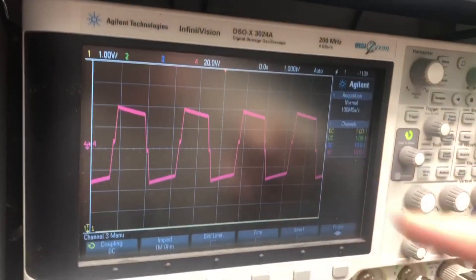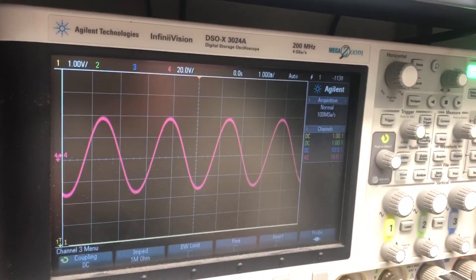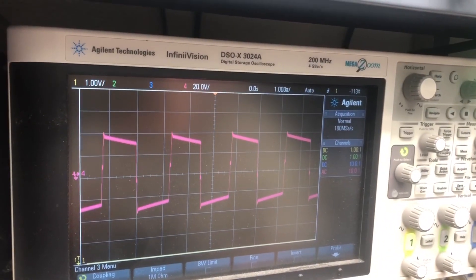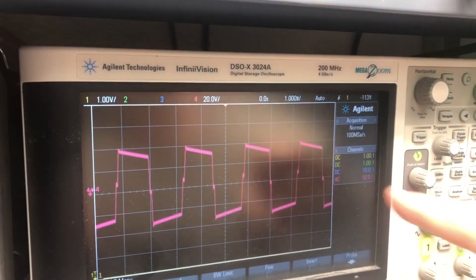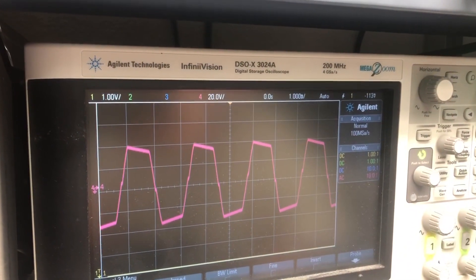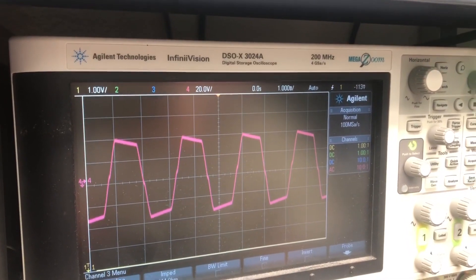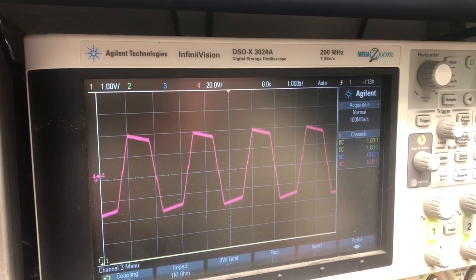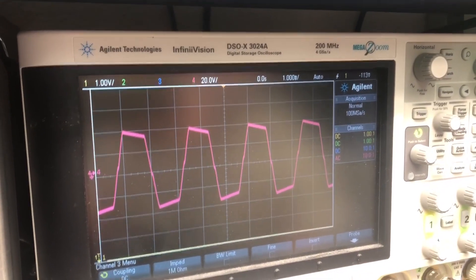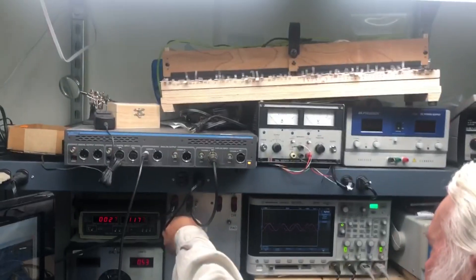Now, you notice we've got some of the same action going on here. The peaks sag a little as we punch in more gain. We've got the little extra sizzle in the middle. But, you know, into the dummy load, it's pretty much a uniform flat-top just like it was with the tube amp in a dummy load. But watch what happens when we switch to the real speaker.